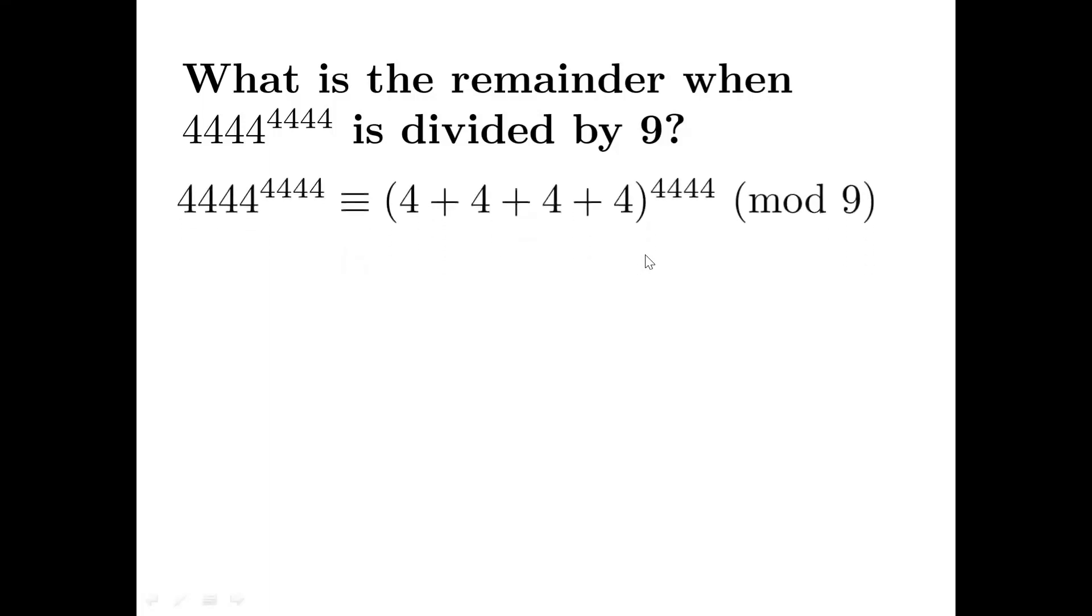With modulo 9, 4,444 is congruent with 4 plus 4 plus 4 plus 4, which has remainder 7 when divided by 9.